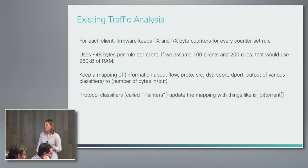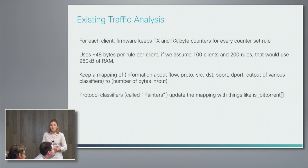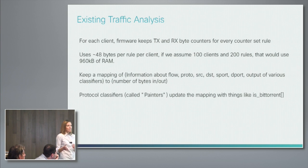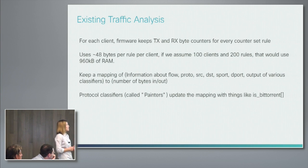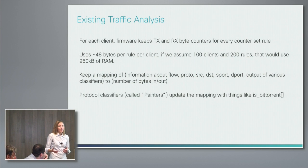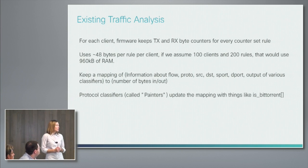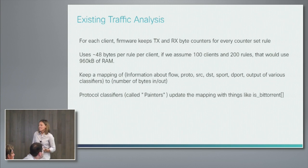Looking at this more closely: the firmware grabs information from TX and RX and stores it in RAM. In this example use case, 48 bytes per rule — if we assume 100 clients and 200 rules, we end up with about 960 kilobits of data stored in RAM. The problem with this is that it scales linearly. As soon as we add more rules we need more data to store that information, so we realized we needed to upgrade the way we store and analyze data.